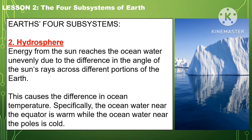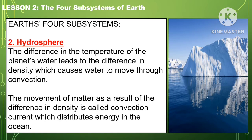Energy from the sun reaches the ocean water unevenly due to the difference in the angle of the sun's rays across different portions of the Earth. This causes the difference in ocean temperature. Specifically, the ocean water near the equator is warm, while the ocean water near the poles is cold. The difference in the temperature of the planet's water leads to the difference in density, which causes water to move through convection.